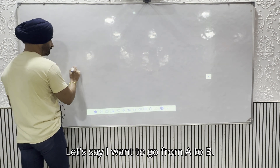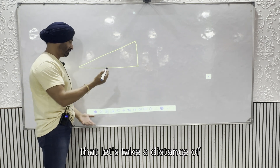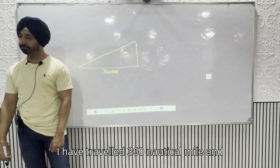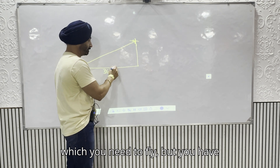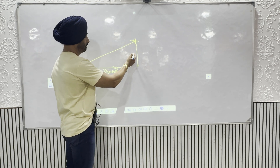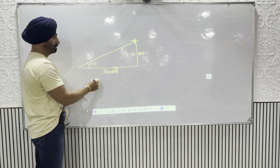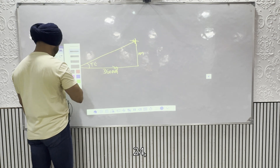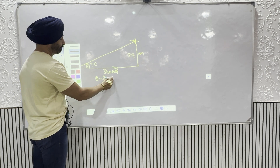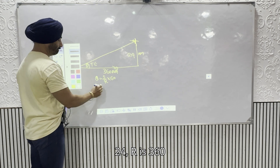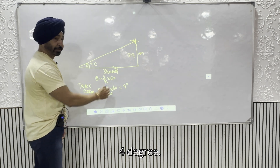Let's say I want to go from A to B. After flying 360 NM I realize I am 12 NM left of track. What is the track error? Using theta = S/R × 60: S = 12, R = 360, so theta = (12/360) × 60 = 2 degrees. Wait — let me correct: with S = 24 NM and R = 360, theta = (24/360) × 60 = 4 degrees track error.